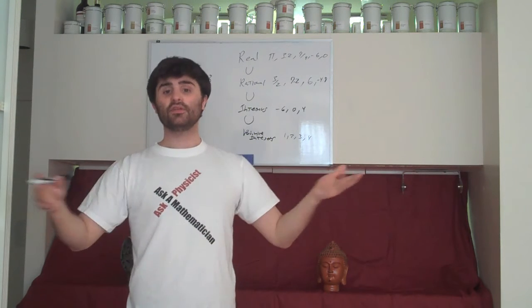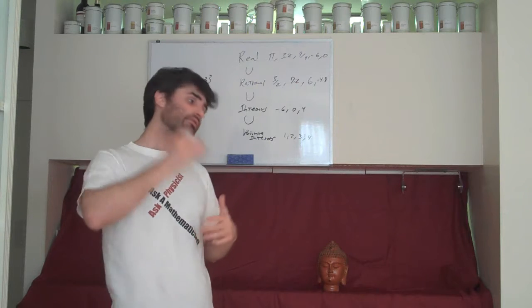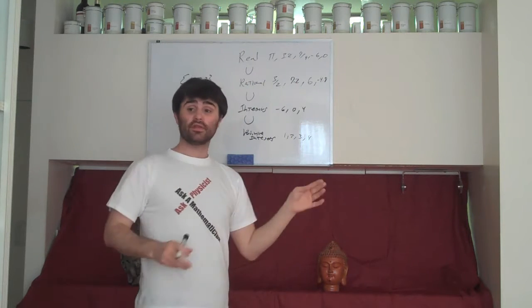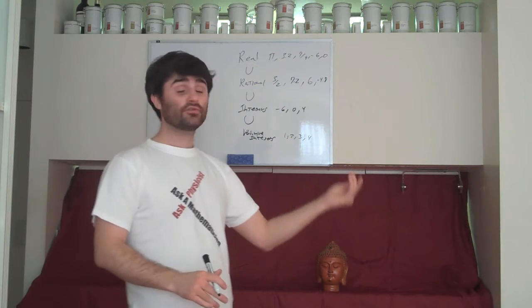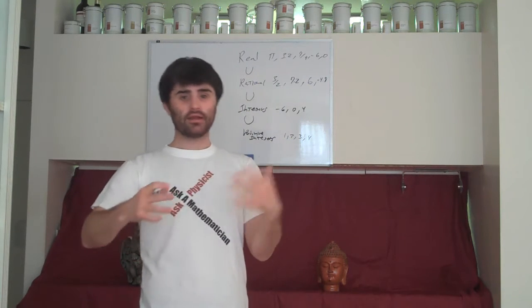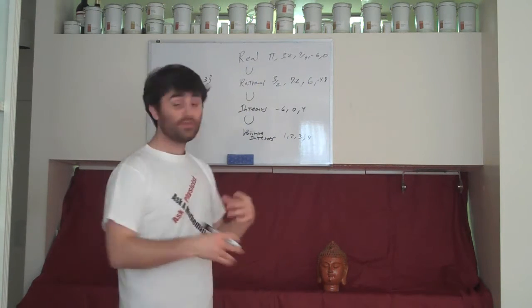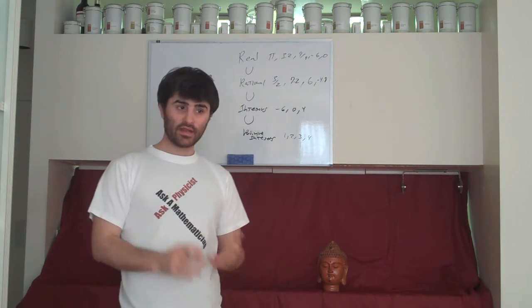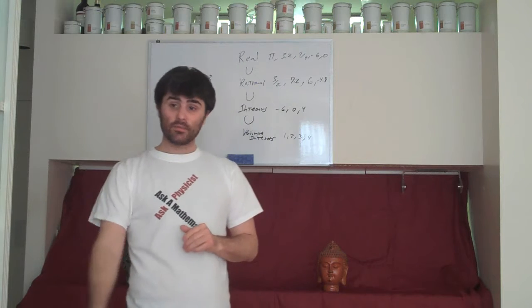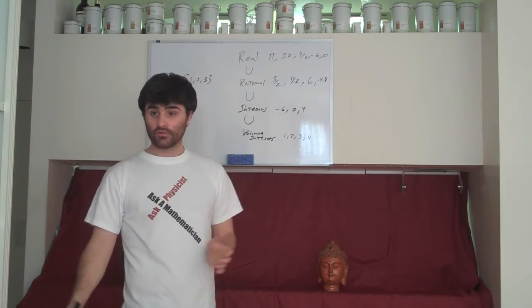If we counted them, we'd always get the number infinity. You might just say, oh well the size of all these sets is infinity, but maybe we can do better than that. Maybe some infinities are larger than others, and we need a way of comparing these infinities. And so to do that, I'm going to introduce a new way of measuring the size of finite sets, and then I'm going to apply it to infinite sets, because this way of counting elements doesn't work for infinite sets.